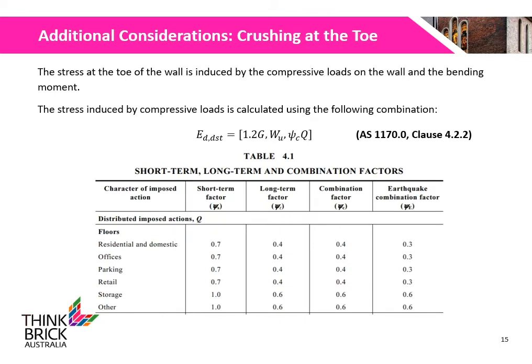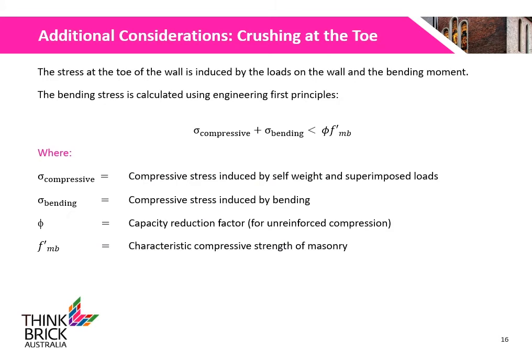The stress at the toe of the wall is induced by the compressive loads on the wall and the bending moment. The stress induced by compressive loads is calculated using the following combination, which can be found in AS1170. Table 4.1 of AS1170 shows the different combination factors for different building purposes. To ensure there is no crushing at the toe, we need to ensure that the compressive and bending stresses are less than the factored characteristic compressive strength of the masonry.